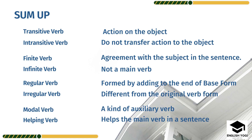So what we have tried to learn: verbs are divided into transitive verb — which needs an object for the action; intransitive verb — which does not transfer action to an object; finite verb — which has agreement with the subject; infinite verb — which is not the main verb; regular verb — which follows the standard format; irregular verb — which does not follow the standard format and is completely different from the base form; and modal verb — a kind of auxiliary verb used to show ability, possibility, and obligation.